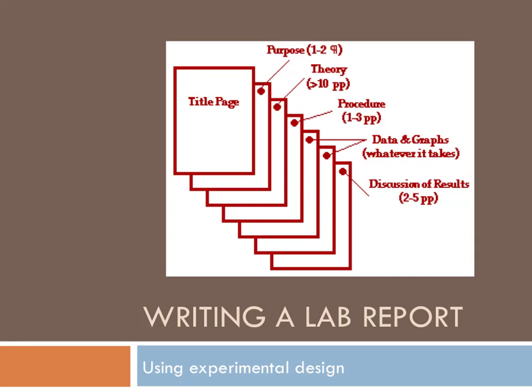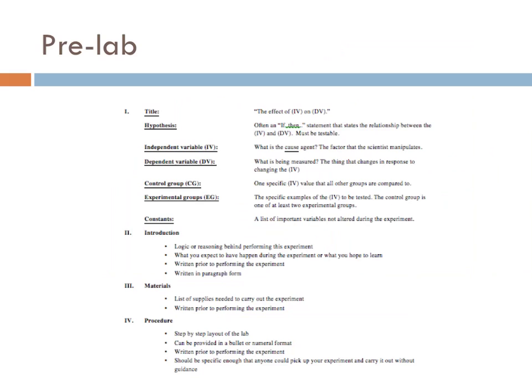Key components would include your purpose, prior research, expectations, lab procedures, data in the forms of tables and graphics, and a summary of results. For all the lab reports that you will write this year, there are six components that you need to complete.